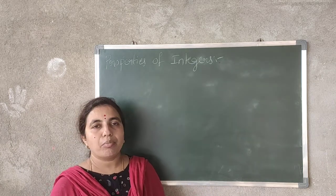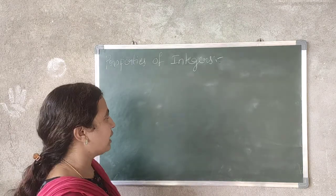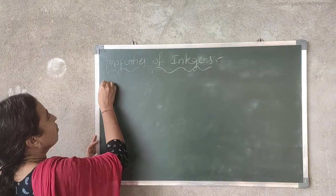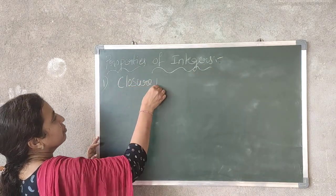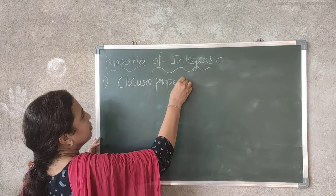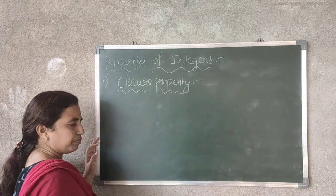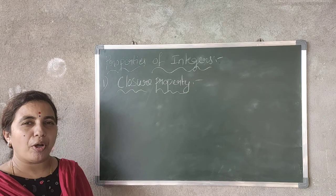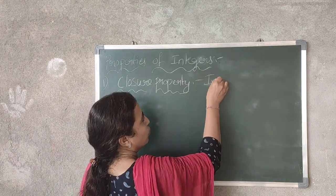So today I will explain about those properties. First property — what is that first property? Closure property. So, closure property means what? In general, what is the definition of closure property?